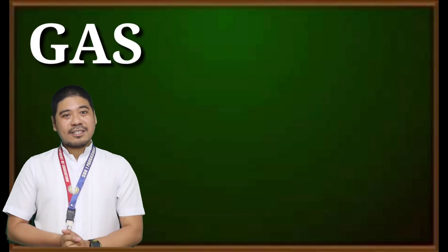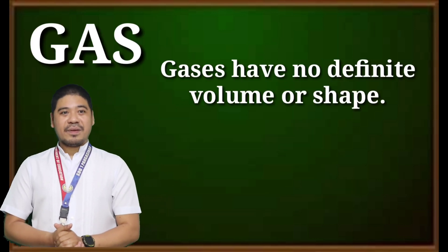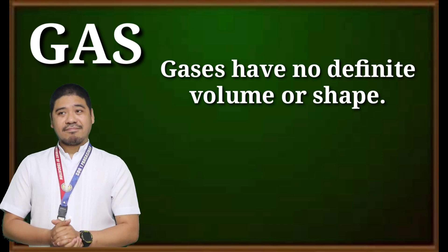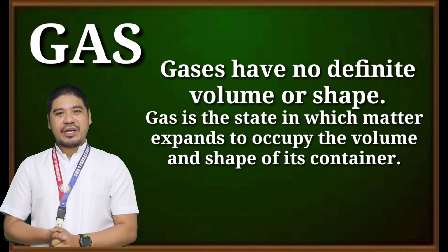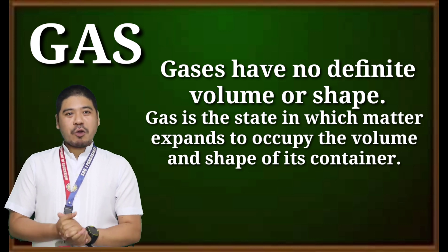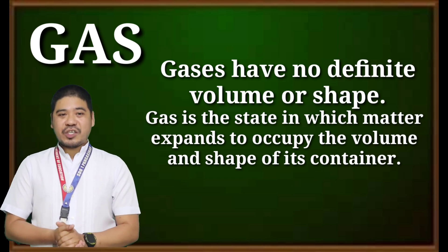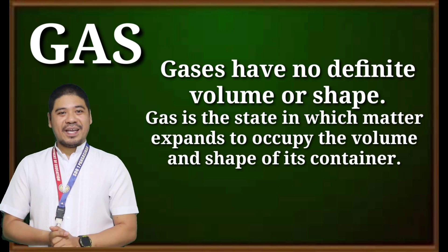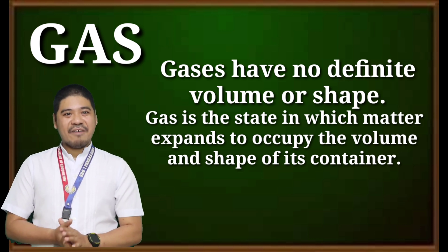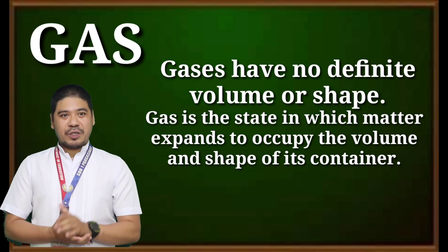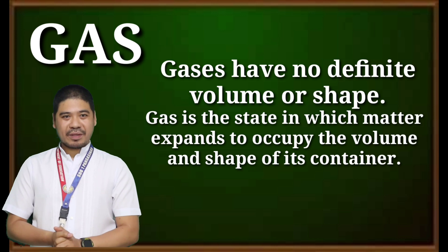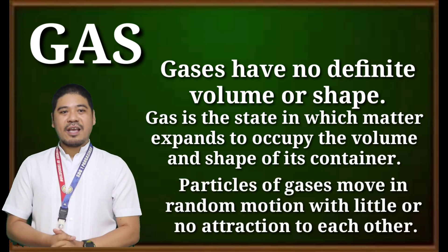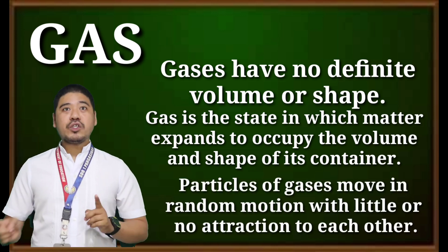And lastly, we have gas. Gases have no definite shape or definite volume. Gas is the state in which matter expands to occupy the volume and shape of its container. Gases have low density and contain scattered molecules that are dispersed across a given volume. Particles of gases move in random motion.